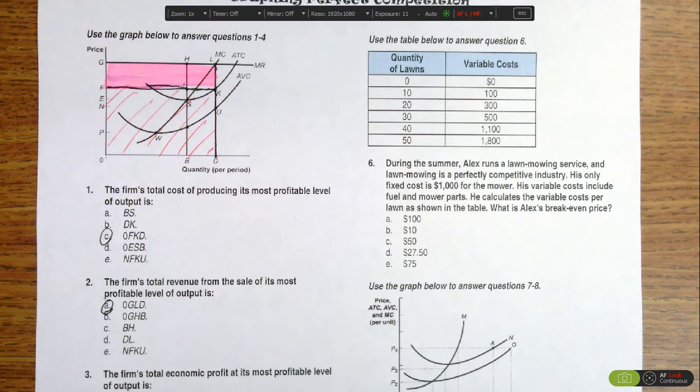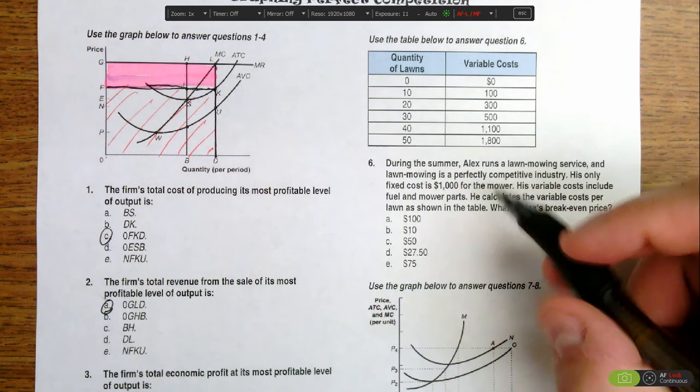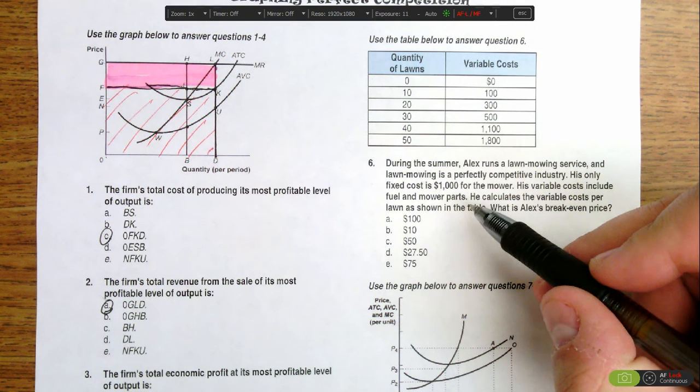This question is asking us to determine the break-even price for Alex and his lawn mowing service. The break-even price is the minimum point of the average total cost curve, so we need to calculate average total costs.